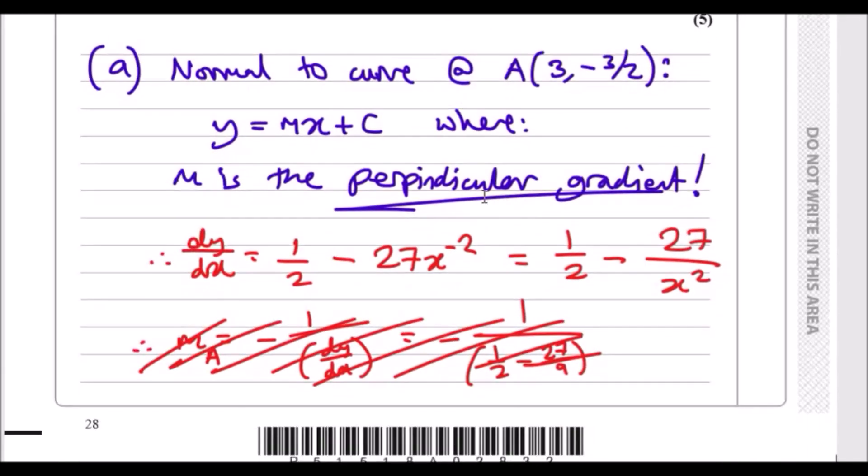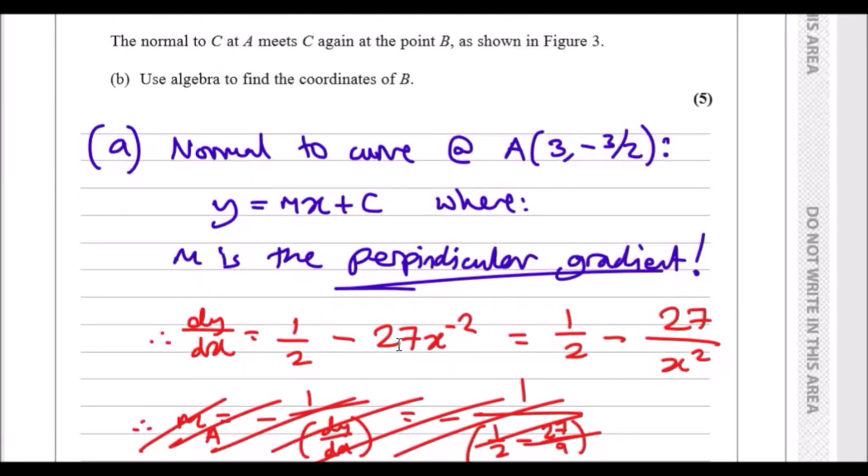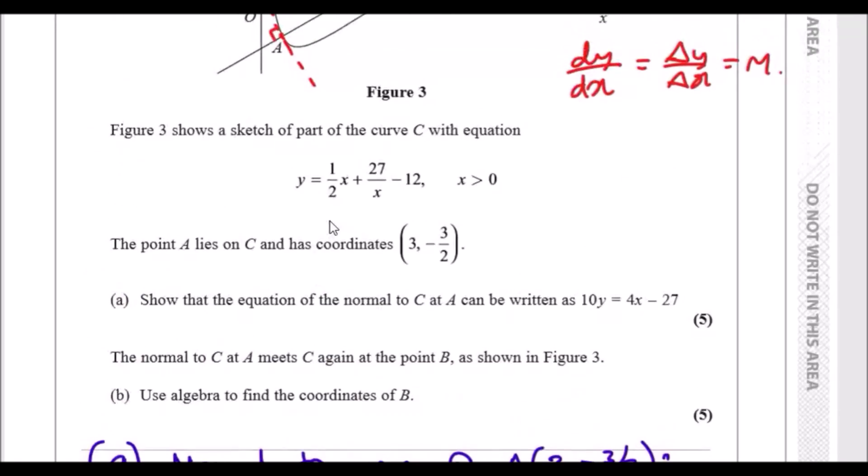The first thing you want to do is differentiate the curve, and then plug in the value A. To differentiate this one, first rewrite the equation in a nice way. So I write this as x over 2 plus, now this one I'll write in power form, so it'll be 27x to the negative 1, because you've got to bring it up, minus 12.